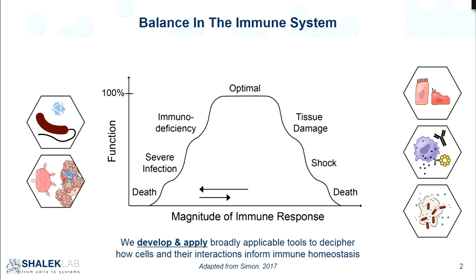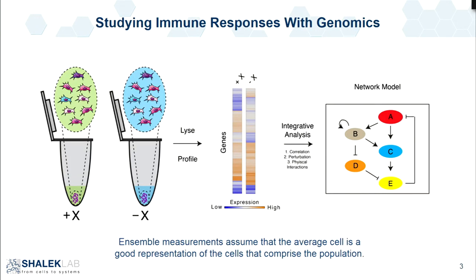If we're developing and applying tools, the question really becomes why do we need new tools? My postdoc led me to work with the Broad, who convinced me that we could find everything in the universe through genomics — we could take a set of cells that had been exposed to one perturbation and then another, look at all of the genes expressed in these two tubes, and then use integrative analyses to get a sense of what was driving the response to this particular perturbation.